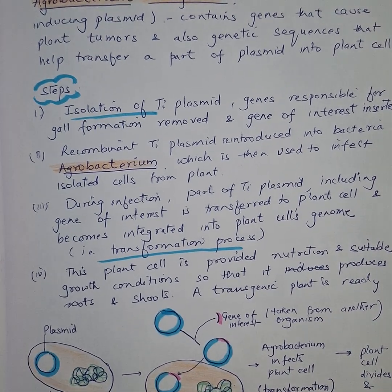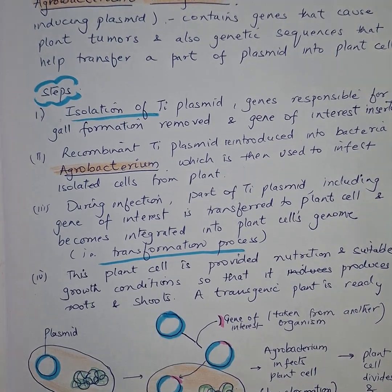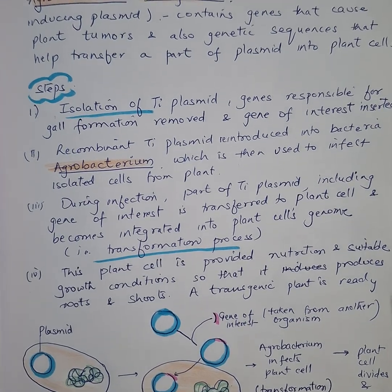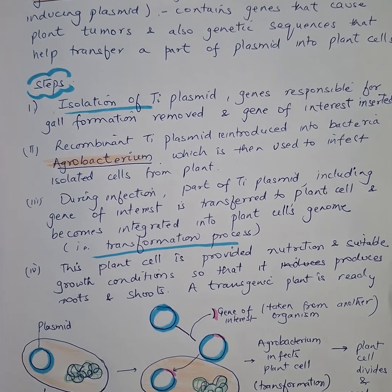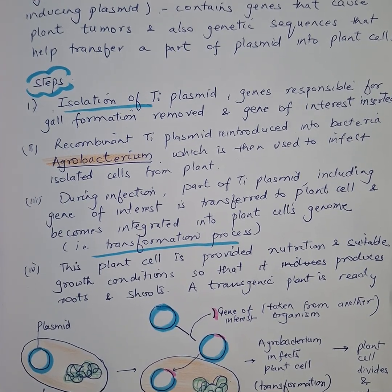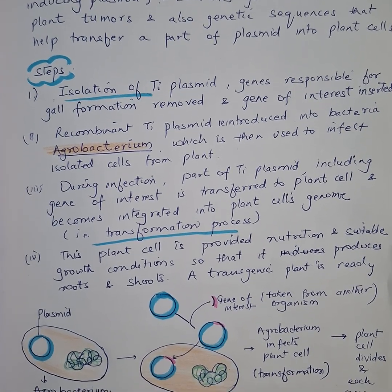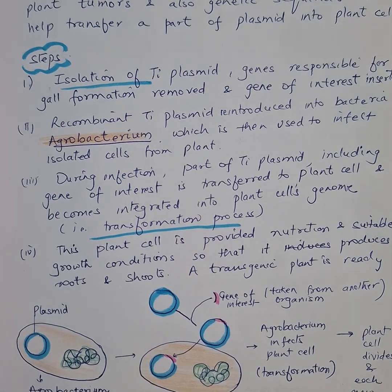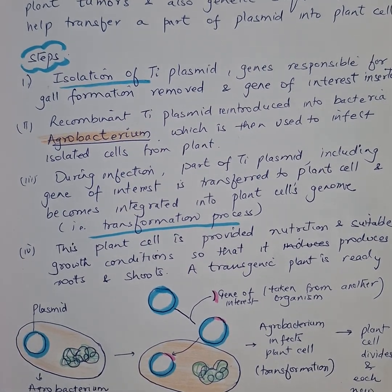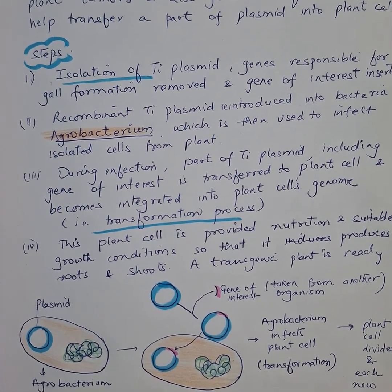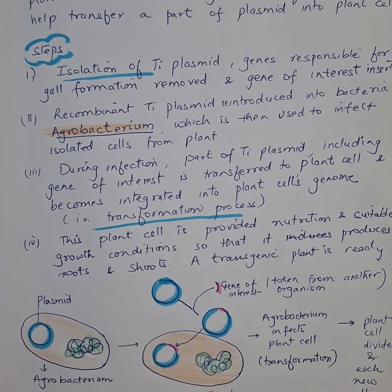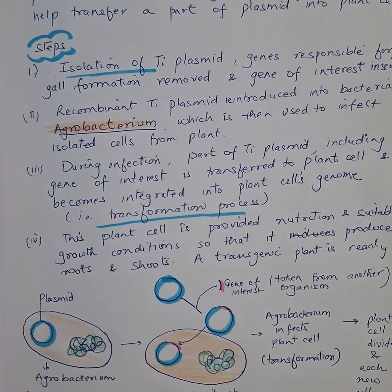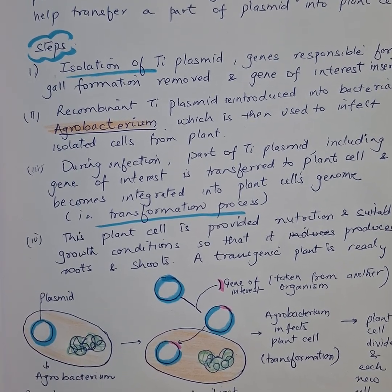Then this recombinant Ti plasmid is reintroduced into the bacteria, which is then used to infect isolated cells from the plant. During infection, part of the tumor-inducing plasmid — including the gene of interest — is transferred to the plant cell and becomes integrated into the plant cell's genome.